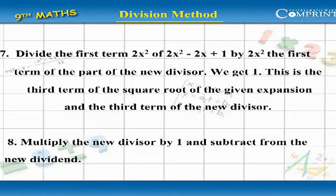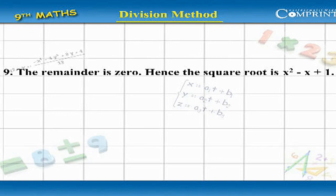Step 8: Multiply the new divisor by 1 and subtract from the new dividend. Step 9: The remainder is 0. Hence, the square root is x squared minus x plus 1.